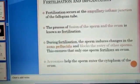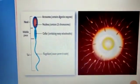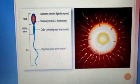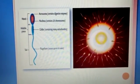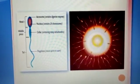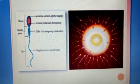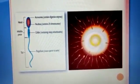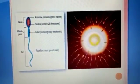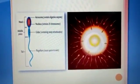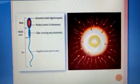The acrosome helps the sperm enter the cytoplasm of the ovum. The human sperm is divided into three main parts: head, middle piece, and tail. The head contains the acrosome and nucleus. The acrosome contains digestive enzymes, and the nucleus contains 23 chromosomes. The middle piece contains mitochondria which continuously supply energy to the sperm. The tail helps in motility.